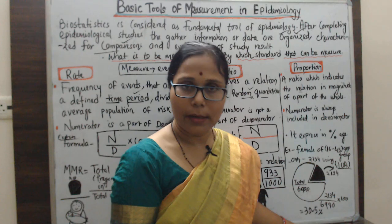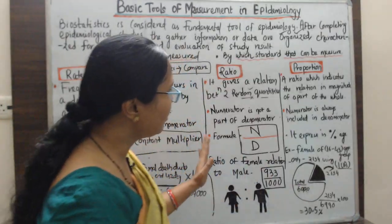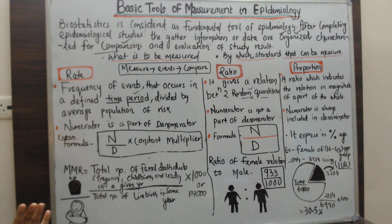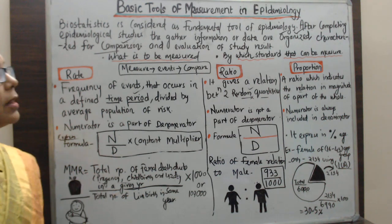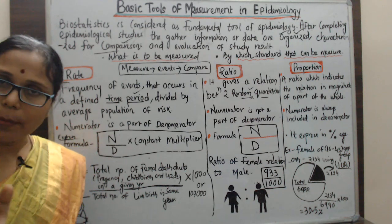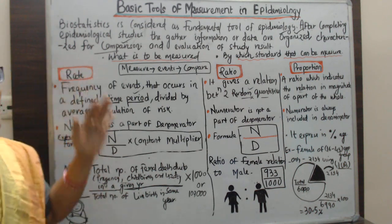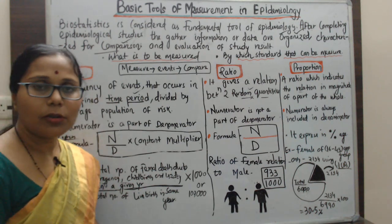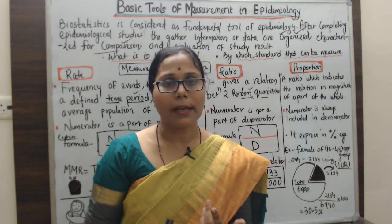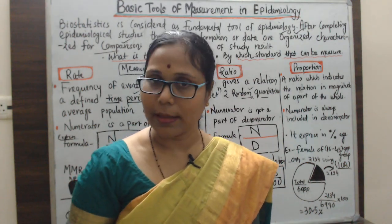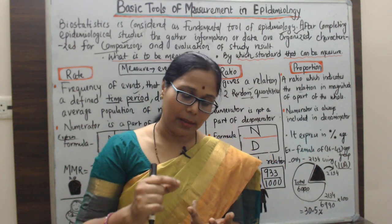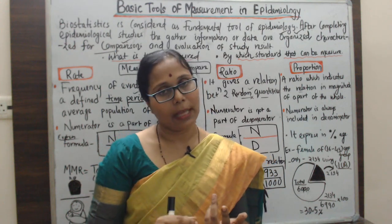This covers the basic tools of measurement in epidemiology. The important points are: biostatistics is the fundamental tool of epidemiology, and the three main basic tools are rate, ratio, and proportion. For rate, the time factor is present, and there are three elements: numerator, denominator, and the time factor.